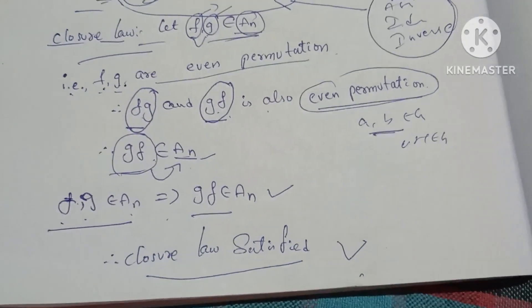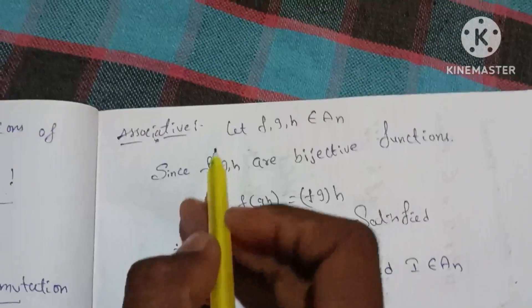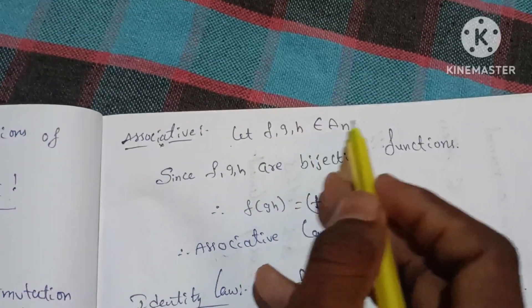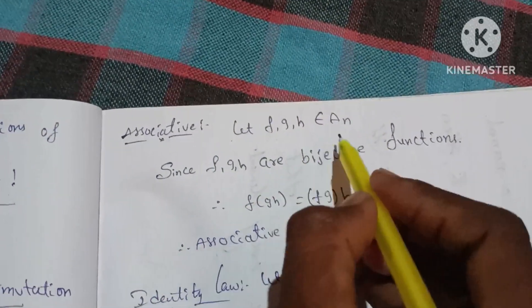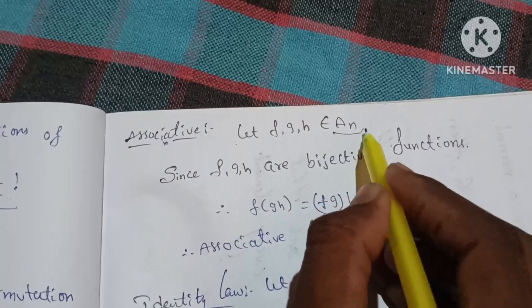Second law is the associative law. Let f, g, h belong to Aₙ, meaning they are even permutations.